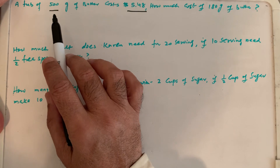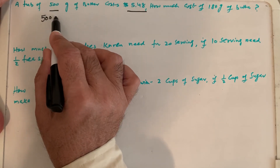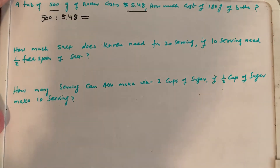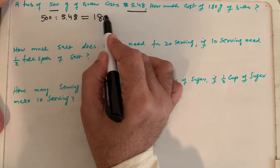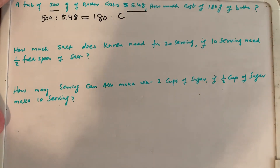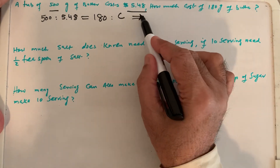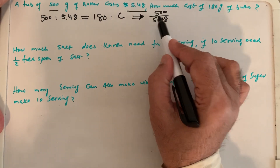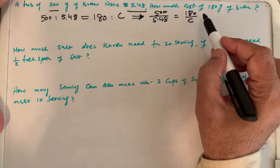What is the known quantity? 500 grams of butter — that is the gramage — and the cost is $5.48. What does it equal to? 180 grams versus 500 grams, and the cost C is unknown for 180 grams. So if we have this, these ratios can be written as 500 divided by 5.48 equals 180 divided by C.